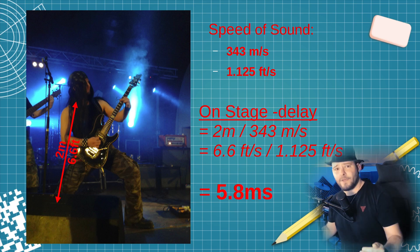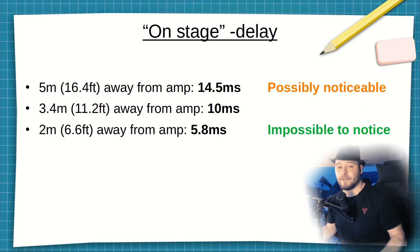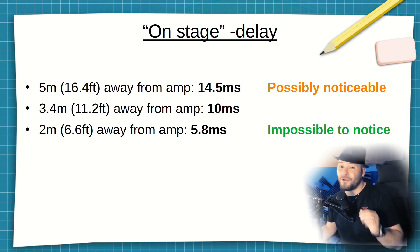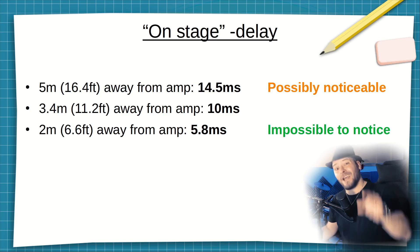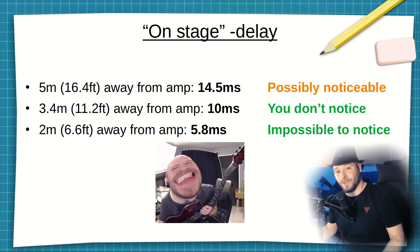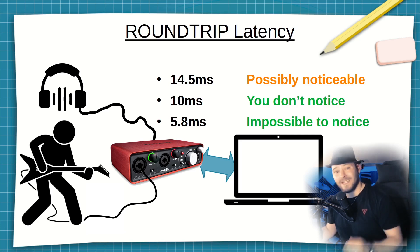Playing midway at 3.5 meters or 11 feet from the amp gives a 10 millisecond delay. There could be people — especially drummers — who might notice that, but they probably wouldn't be bothered by it. You wouldn't even notice, and that's what matters. These are very good reference values for what you really need from your digital audio gear to have a good experience.